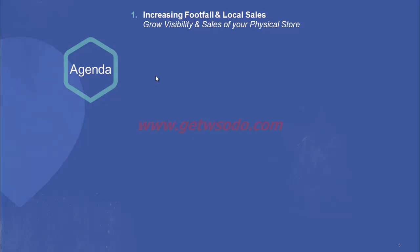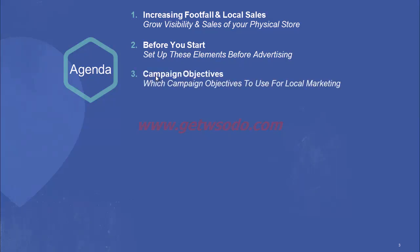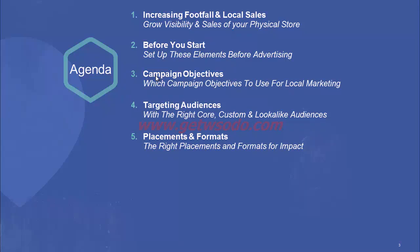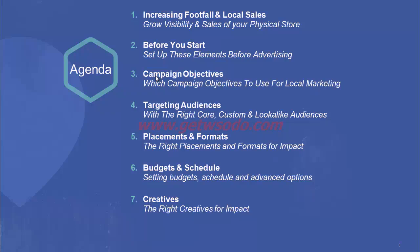We'll cover how you can grow visibility and sales of your physical store. Before you get started with creating your ad campaign, we'll go through a quick checklist of all the elements you need to have in place. Next, we'll look at which campaign objectives to choose, which core audiences work best, how to utilize custom and lookalike audience targeting, which placements and formats to choose, how to set the budget, schedule, and advanced options, the best creatives for maximum impact, and how to measure effectiveness and optimize results to ensure you keep getting better ROI over time.